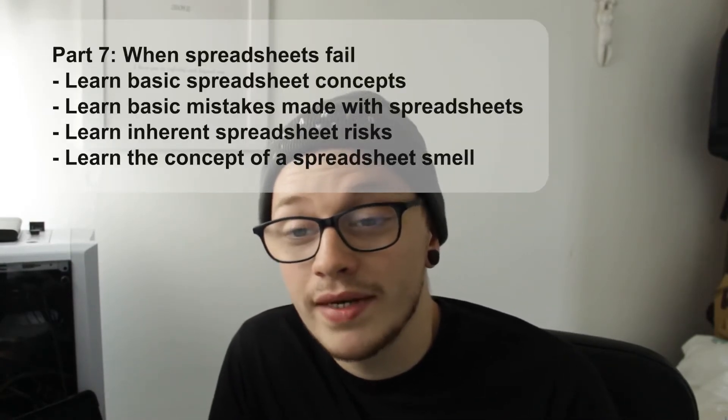Part seven is about when spreadsheets fail. You'll learn basic spreadsheet concepts, basic mistakes made with spreadsheets, inherent spreadsheet risks, and the concept of a spreadsheet smell — it sounds a bit funny, but it's a good concept. This was quite funny when studying this particular week, because it hadn't been long since the UK government messed up with the COVID case tracker by using a spreadsheet — the old XLS file type — which had a cap on it, and that's why it failed. All the tutors and students had good jokes about it.